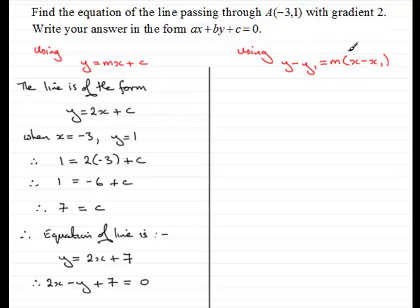So I have the gradient. The gradient is 2, and I have my coordinates, X1 and Y1, of a point on the line. X1 being minus 3 and Y1 being 1.